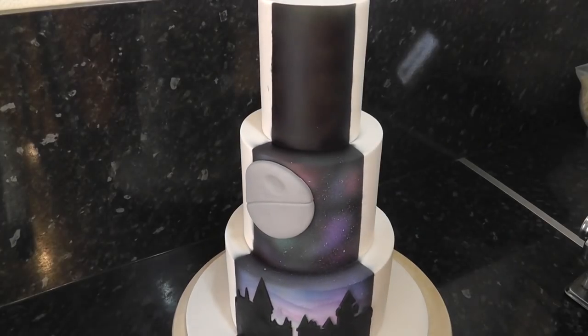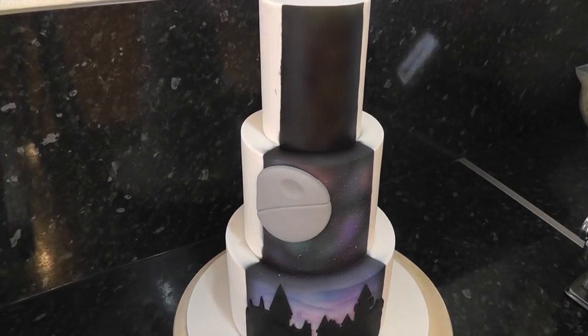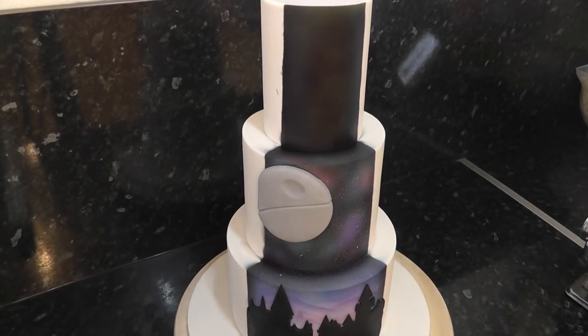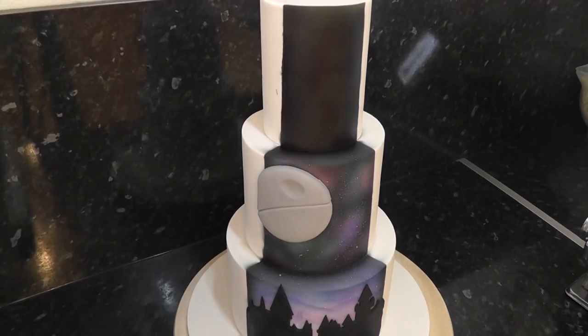Now, before adding on the swags, you'll want to add on the details that are going to be underneath it. Such as this death star that will be peeking out from the swag. This is just a large grey circle. And the silhouette of Hogwarts which goes under the swags at each side.